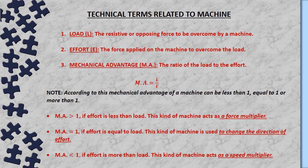To understand a machine, we need to know some technical terms. First, load: the resistive or opposing force to be overcome by a machine. Second, effort: the force applied on the machine to overcome the load. Third, mechanical advantage (MA): the ratio of the load to the effort, so MA = Load / Effort. The mechanical advantage of a machine can be less than 1, equal to 1, or greater than 1, because it is a fractional value depending on numerator and denominator.